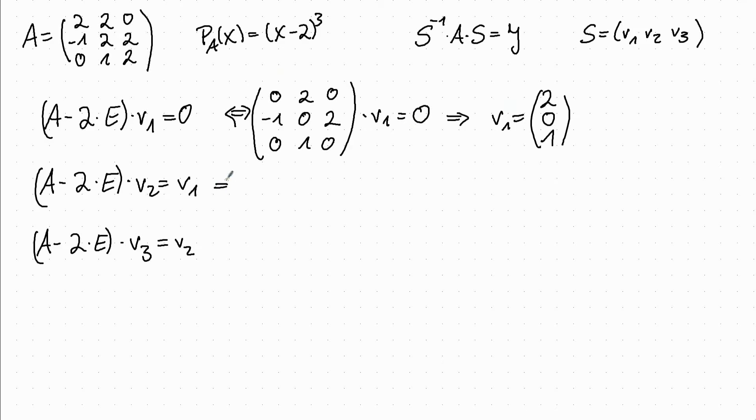So the next condition. This is equivalent to [0, 2, 0; minus 1, 0, 2; 0, 1, 0] times V2 is equal to V1. So we chose V1 to be this: [2, 0, 1].